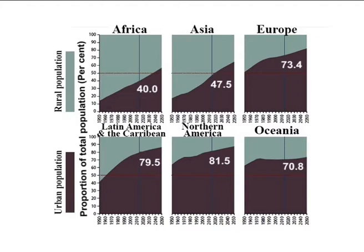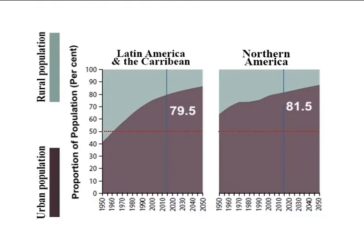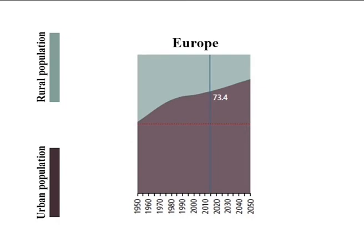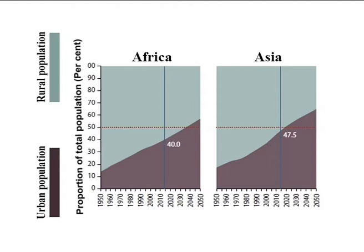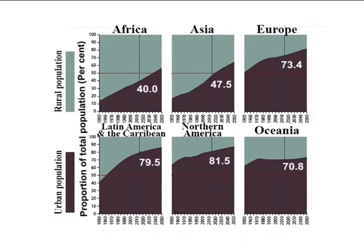Figure 2 shows that levels of urbanization vary greatly across regions. In 2014, high levels of urbanization at or above 80% characterized Latin America, Caribbean, and North America. Europe, with 73% of its population living in urban areas, is expected to be over 80% urban by 2050. Africa and Asia, in contrast, remain mostly rural, with 40% and 48% of their respective populations living in urban areas.